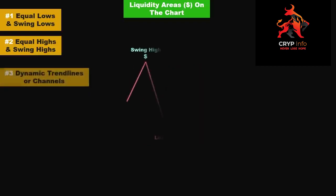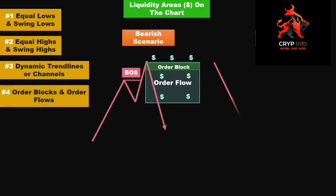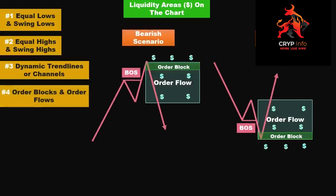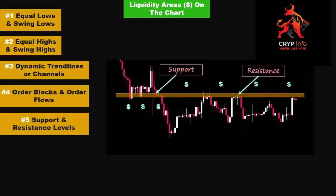Dynamic trend lines and channels: liquidity zones can be identified above or below dynamic trend line and channel boundaries, because retail traders may place orders in these areas. Order blocks and order flows — areas where significant orders have been executed or pending orders are clustered — can also act as liquidity zones. Support and resistance levels that have previously acted as support or resistance often attract market participants, making them potential liquidity areas.